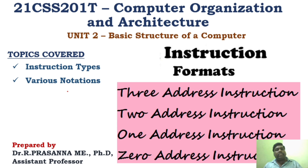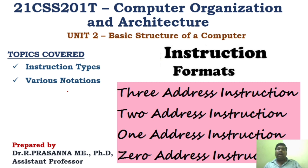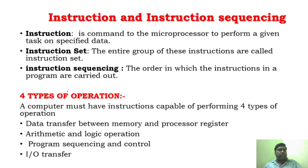If you understand the logic you can write it on your own. So we will see what are the different types of instructions. There are different types: 3-address instruction, 2-address instruction, 1-address instruction, and 0-address instruction. And similarly there are a lot of general instructions as well. We will see all the types of instructions in this particular video.